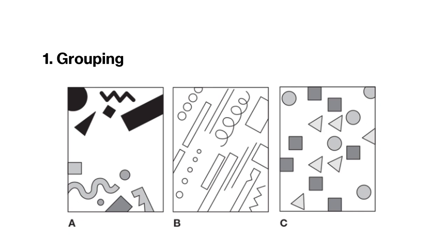Now that you have those things in mind, how is group B unified? Everything is angled the same way — its orientation is diagonal. So all of these little objects are oriented diagonally.